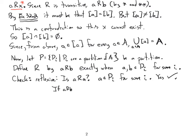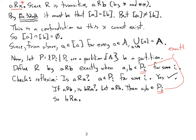Now let's check symmetry: if a is related to b, is b related to a? If a is related to b, that means a and b are in the same subset of the partition, so obviously b is related to a as well. And I want to point out that when we say an element is in one of the subsets of the partition, it's exactly one, because each element of a set is in only one subset of the partition.